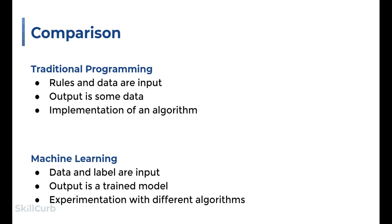Let's summarize the differences between both approaches. First, rules and data are input in the traditional approach, as opposed to labeled data as input in the machine learning approach. Second, the output is processed data for traditional programming, whereas we get a trained model as an outcome of machine learning that is used to make predictions. Third, the software engineer codes or implements the algorithm, whereas a data engineer experiments with existing algorithms to achieve the desired model.